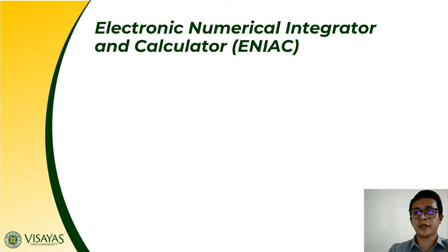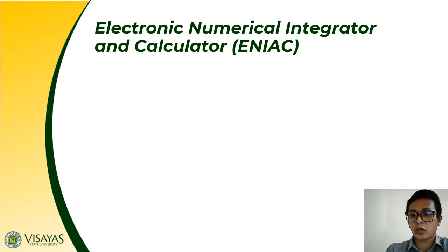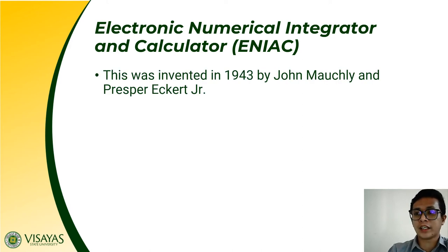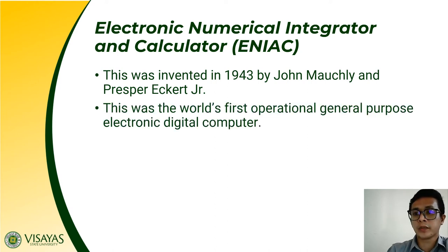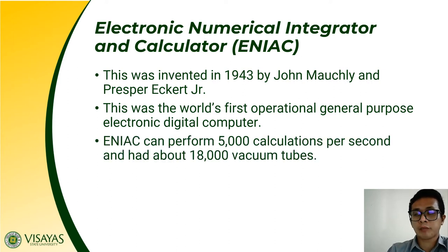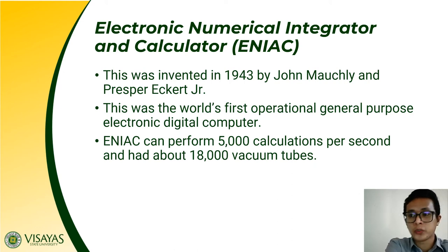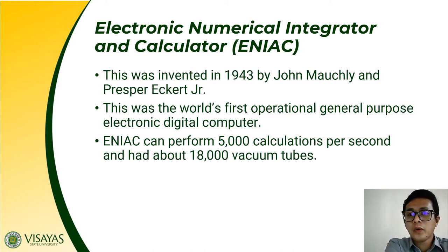Examples of first generation computers include the ENIAC, or Electronic Numerical Integrator and Calculator, invented in the year 1943 by John Mauchly and J. Presper Eckert. It is the world's first operational general-purpose electronic digital computer. It could perform about 5,000 calculations per second and consisted of about 18,000 vacuum tubes.